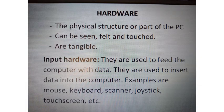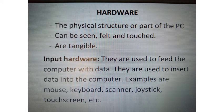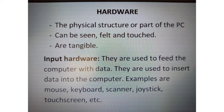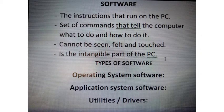The computer is defined as an electronic device because it uses electricity. The two main parts are the hardware and the software. Hardware is the physical part of the computer — the PC, or personal computer — which can be seen and touched; it's tangible. The input hardware refers to the parts used to feed the computer with data, and I've specified some examples, including some I didn't mention in the earlier video.